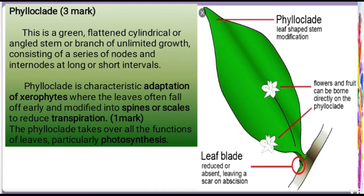Photosynthesis occurs only in plants due to the presence of chlorophyll pigments, which are normally present in leaves. In phyloclad, a leaf-like stem performs the same photosynthesis function. The stem is modified into a leaf-like structure, and the characteristic feature of phyloclad is adaptation of xerophytes.